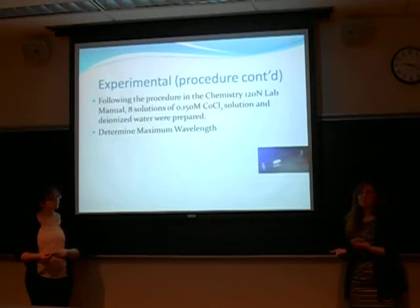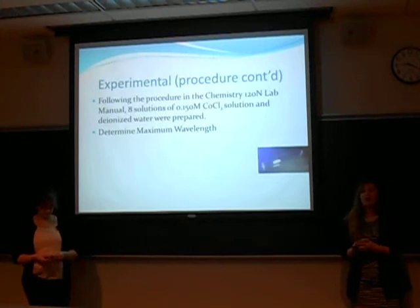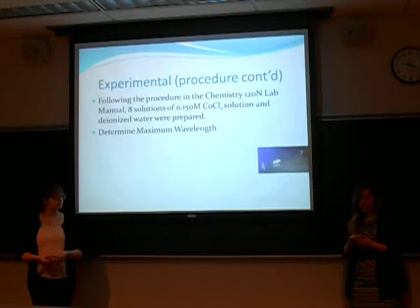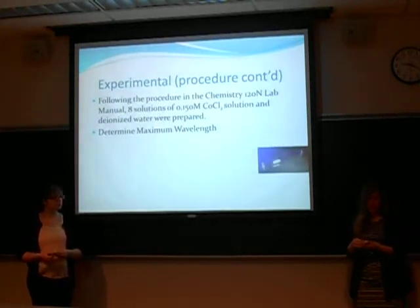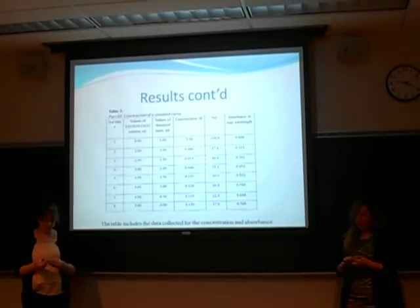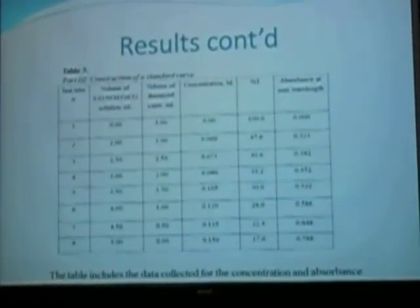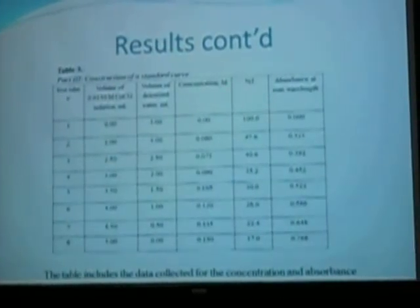Continuing on with the experimentation, eight solutions at various concentrations of the 0.15 molar cobalt chloride solution were prepared in the test tubes. These solutions were each placed in the spectrophotometer after they were transferred into the cuvettes. At 500 nanometers, they were each read for percent transmittance and absorbance values. Table three shows the data including dilution information, concentration values, and the percent transmittance and absorbance values of each dilution of 0.15 molar cobalt chloride that was used to construct a standard curve.